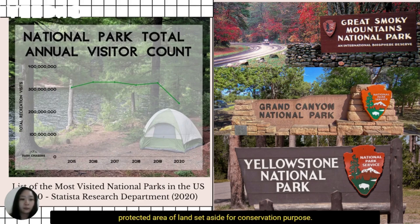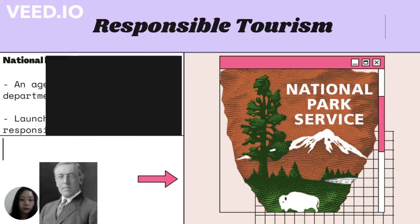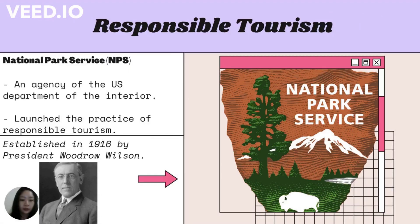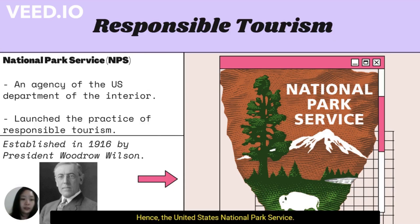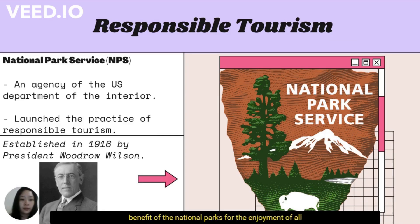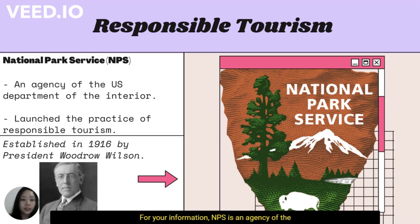These parks are renowned for their breathtaking natural landmarks, camping opportunities, and abundance of wildlife. A national park in the U.S. is a federally protected area of land set aside for conservation purposes. Hence, the United States National Park Service (NPS) launched the practice of responsible tourism for the benefit of national parks and for the enjoyment of all residents and foreign visitors.